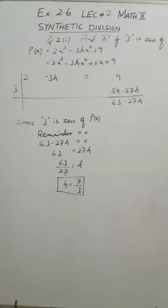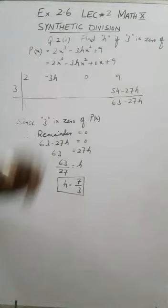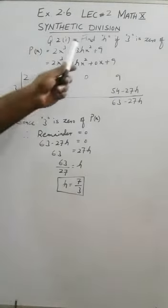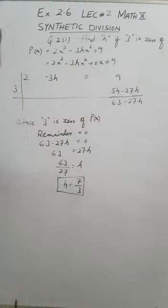Math of class 10, exercise 2.6, lecture number 2. We will discuss question number 2, first part. In this question, a polynomial in variable x is given. I call it P(x) = 2x³ - 3hx² + 9. The question is find the value of h if 3 is zero of the polynomial.